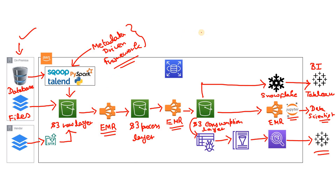Another best practice is file format — very important. There are different file formats in the big data world: Avro, Parquet, ORC, JSON, CSV, etc. You should have a clear understanding of which layer uses which file format, why you are using it, and what the advantages and disadvantages of each format are.